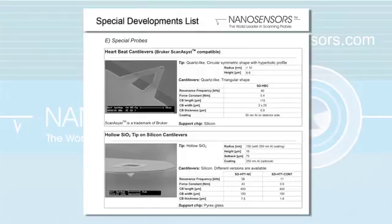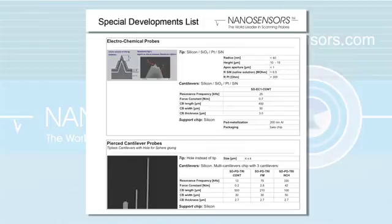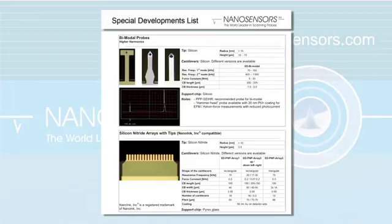If you are looking for a high quality probe for Bruker's new scan assist mode, you will find our NanoSensors heartbeat cantilever in the special probes chapter. In this section, you can also find hollow and transparent oxide tips as well as probes for electrochemical application, and cantilever with a hole instead of a tip for an easier mounting of spheres. There are probes for imaging on higher harmonics as well as tip arrays suitable for nano ink instruments.